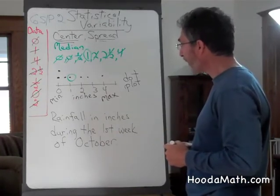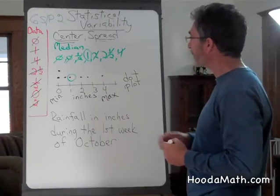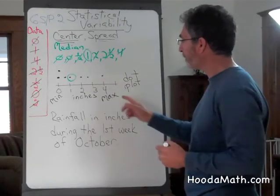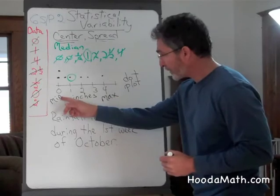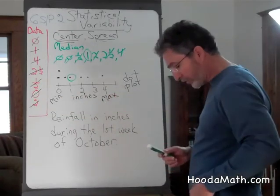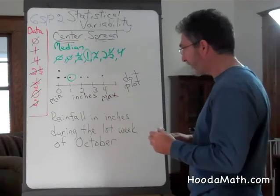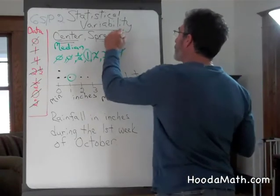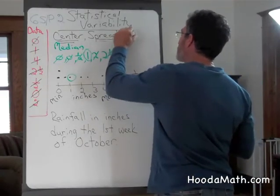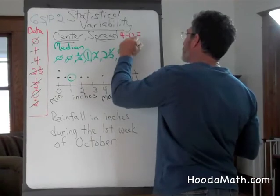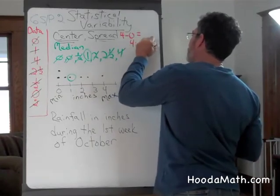Our spread is the distance between our minimum, which is zero, and our maximum amount of rain. So our spread would be four minus zero, or four inches of rain.